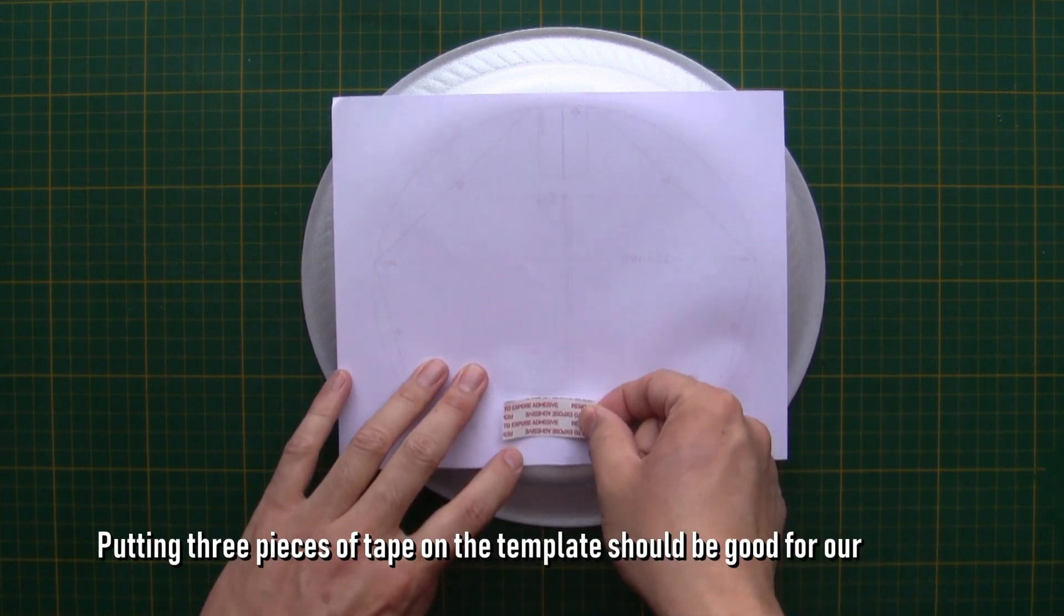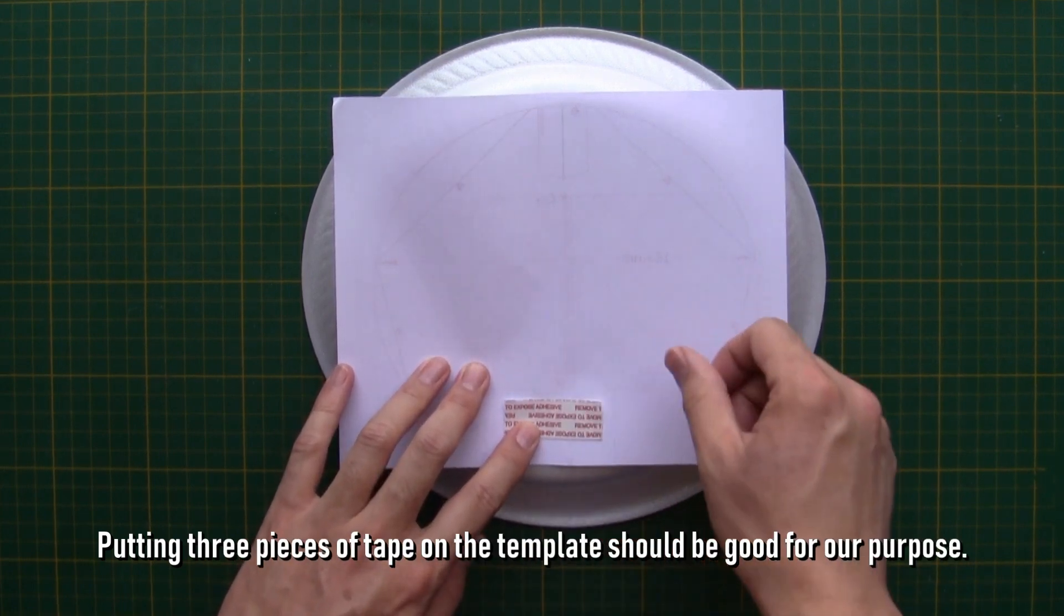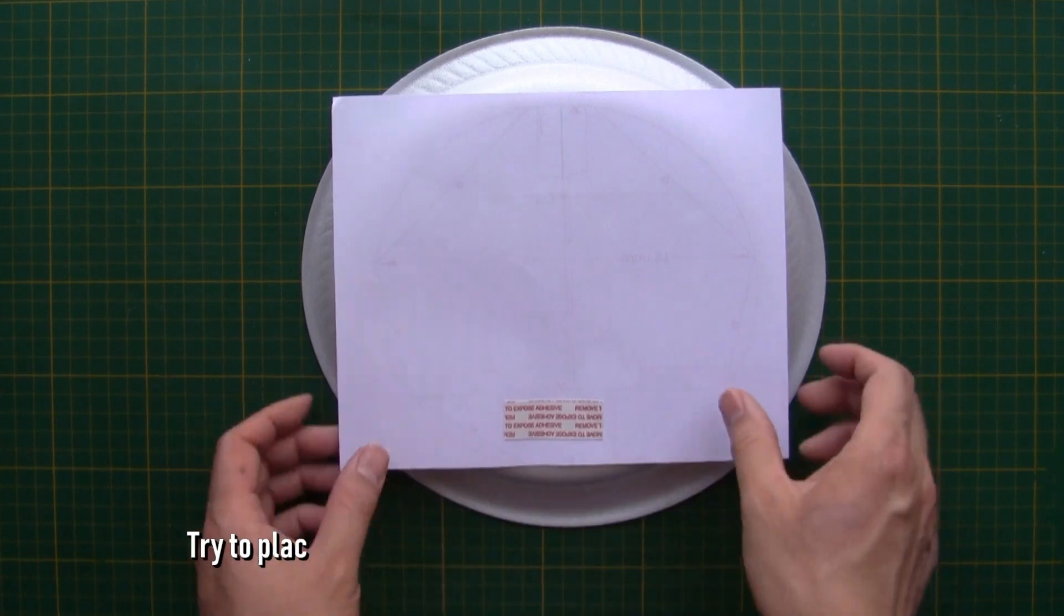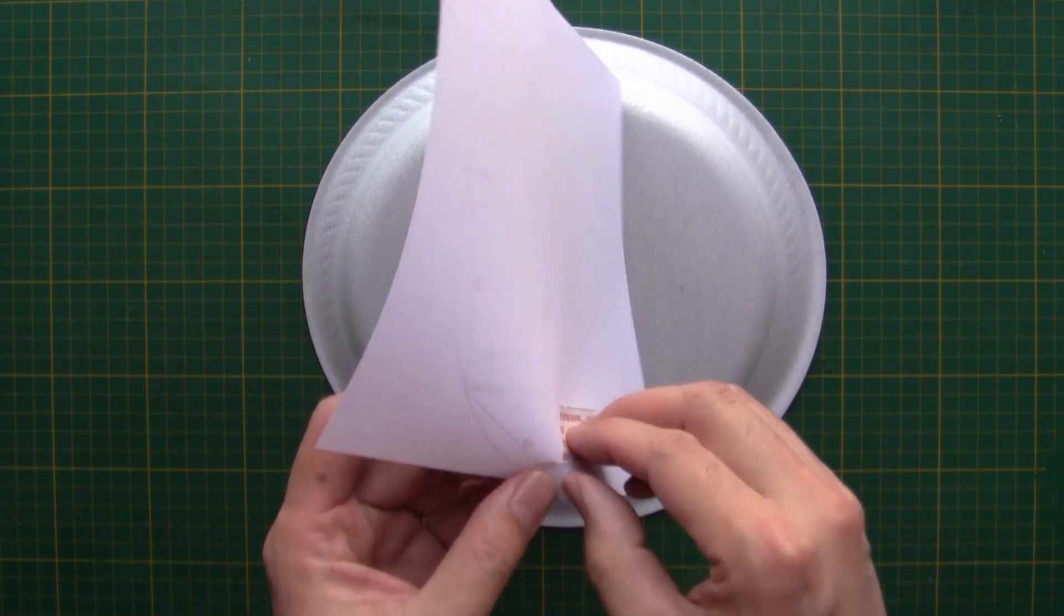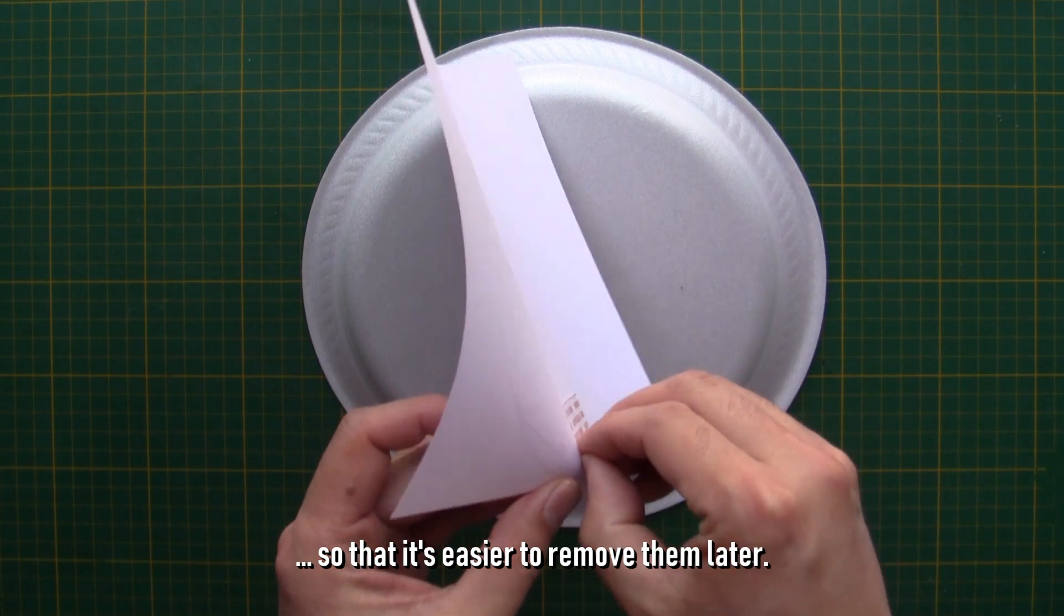Putting 3 pieces of tape on the template should be good for our purpose. Try to place the tape pieces inside the outlines of the parts so that it's easier to remove them later.